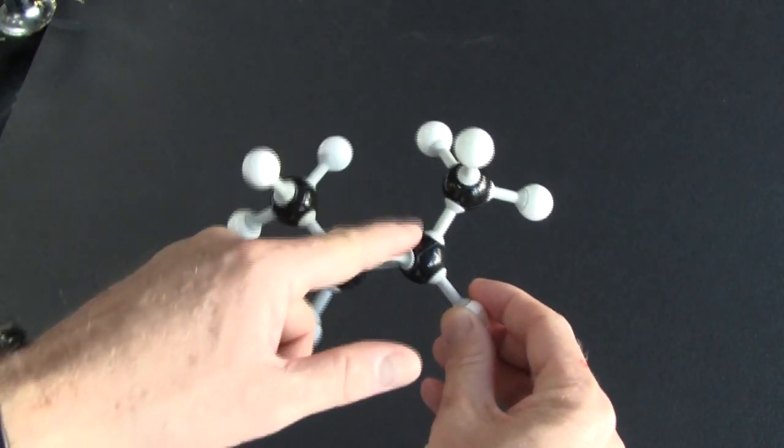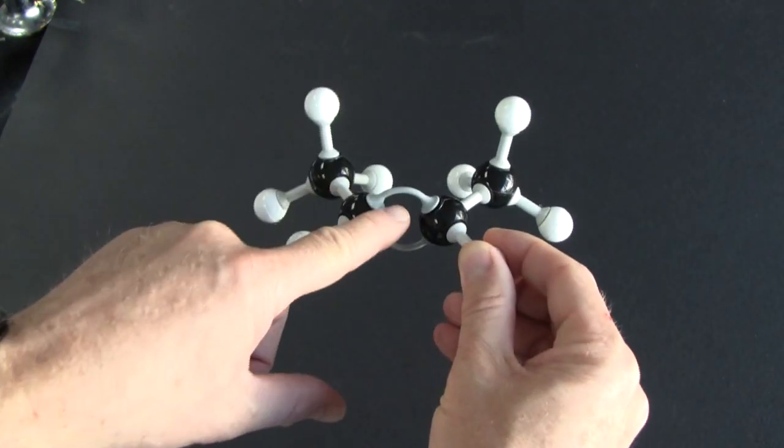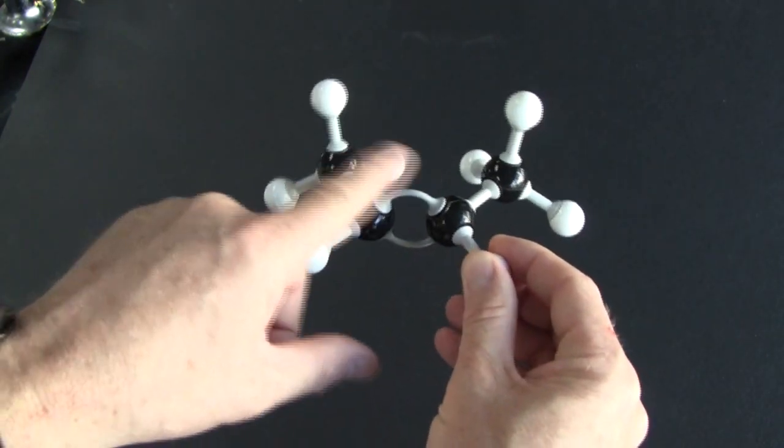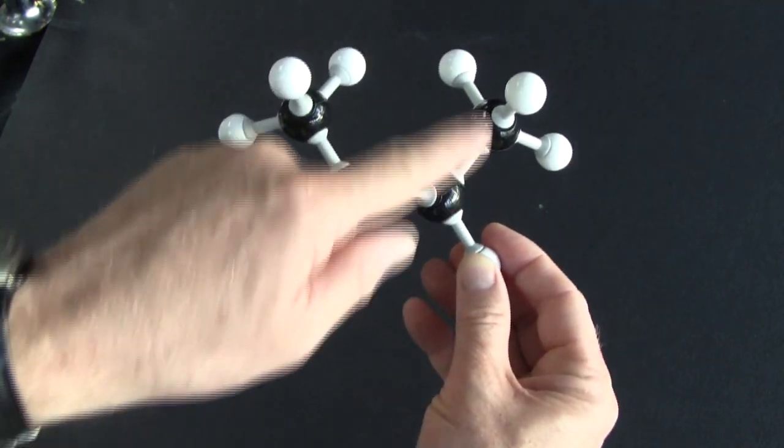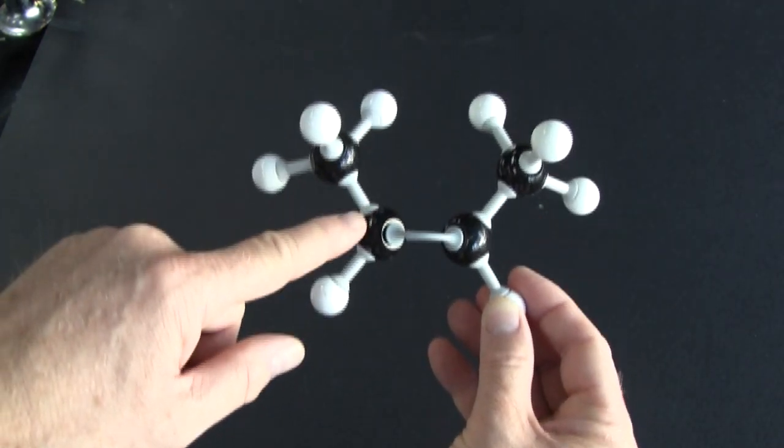This has one, two, three, four carbons and there's a double bond between the two and the three, so that's going to be an alkene. So this is but-2-ene. Now there are two sorts of but-2-ene.